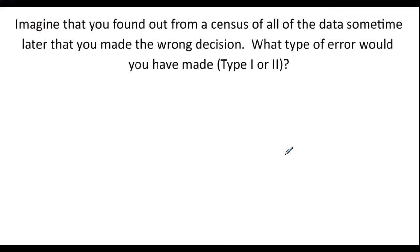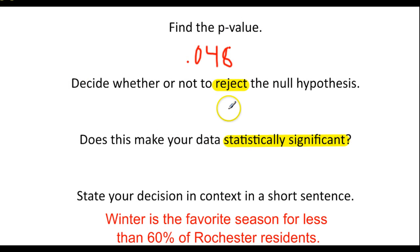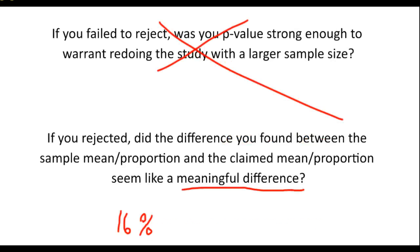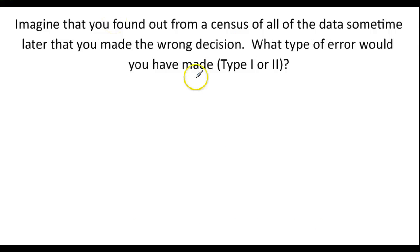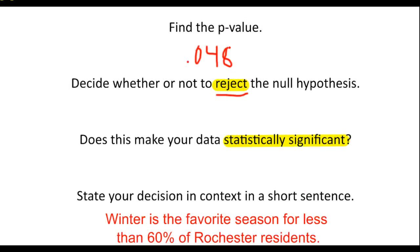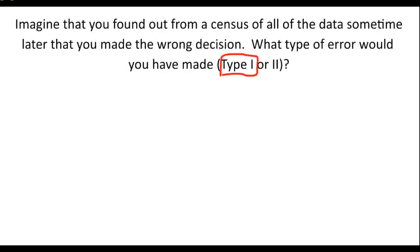Now the very last part we ask ourselves is, what if we made an error? Imagine you found out later that, from a census of all the data, that you made the wrong decision. Remember the decision we made was that we rejected. So this was our decision to reject. Now we have to decide whether or not that was the right decision. If it was wrong when you reject, that is a type 1 error. If you failed to reject, and that was the wrong thing to do, then it would be a type 2. So in our case, because we rejected, if we made an error, that would be called a type 1 error. Now the way I like to think about this is, when you reject, you are significant and you are number 1. So if you reject, your data is statistically significant and you could have made a type 1 error.